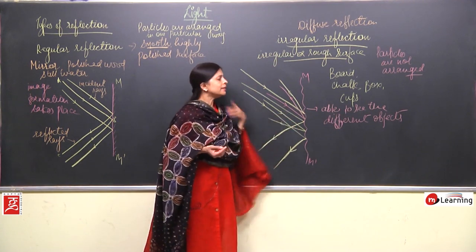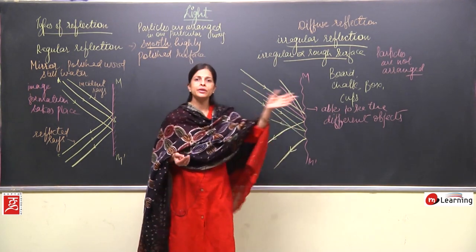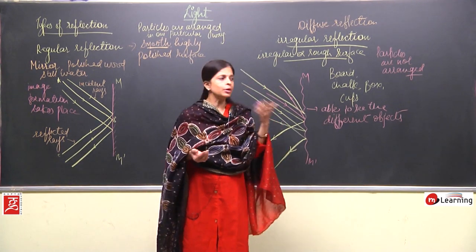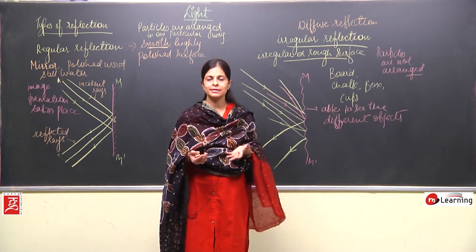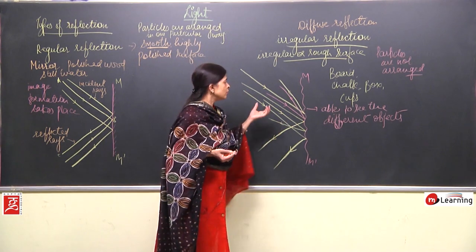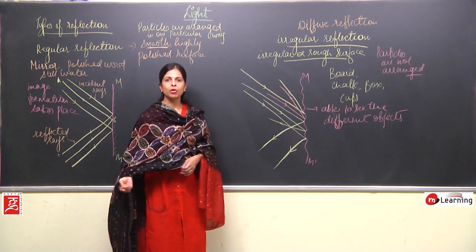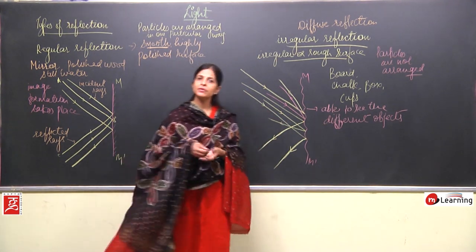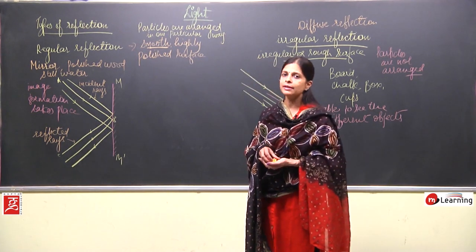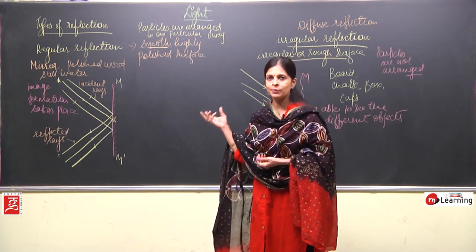Almost all things present around us are 99 percent rough, so they show diffuse or irregular reflection. When light falls on these objects, they scatter the light in all different directions, and that is why we are able to see them. So irregular reflection is very important — because of it, we are able to see all different kinds of objects.